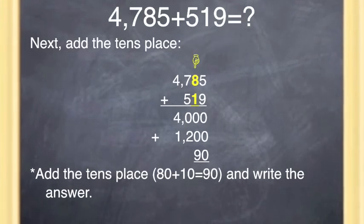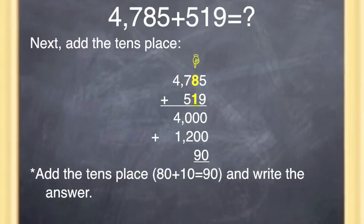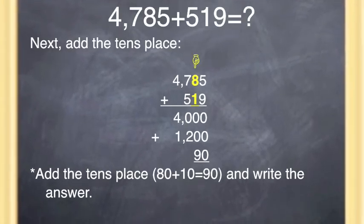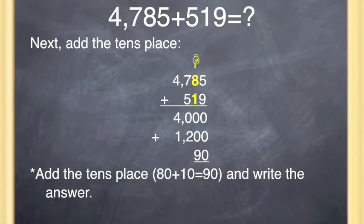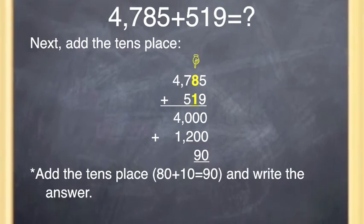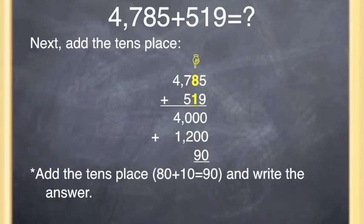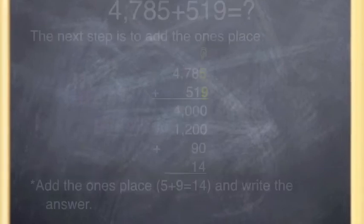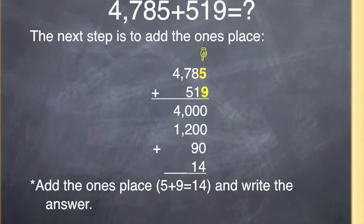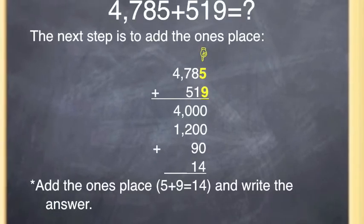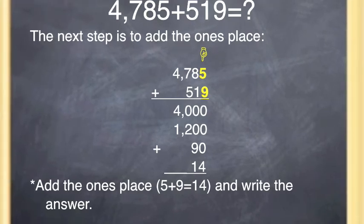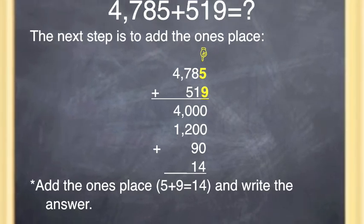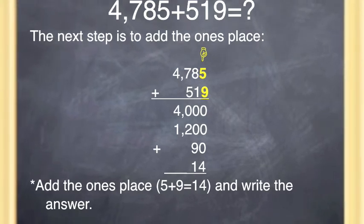Next, you are going to add the tens place, which is 80 plus 10. That gives you a total of 90 — write that 90 under the 1,200. The next step is to add the ones place, which is 5 plus 9. That gives you a total of 14 — write that number under the 90.